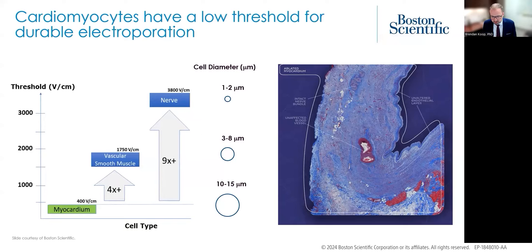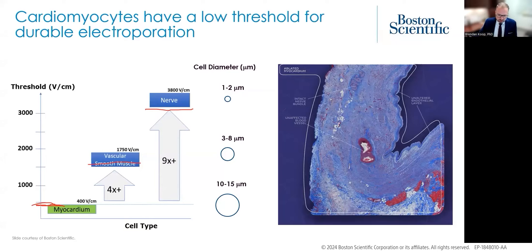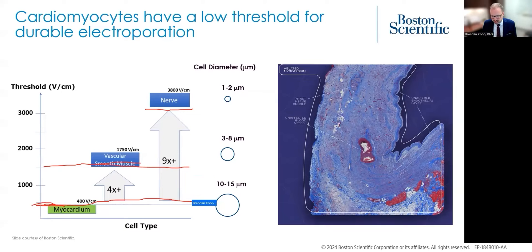Because of these two key points for cardiomyocytes, the cardiac cell has the lowest threshold for irreversible electroporation of any of the cells that we're trying to treat — around 400 to 500 volts per centimeter, depending on the waveform and catheter design. The other types of tissue in the area — vascular smooth muscle, endothelial cells, nerve cells — have many multiples higher threshold for irreversible electroporation. So our job as designers is to treat the local tissue with electric fields in this range, sparing tissues we don't want to ablate while ablating the cardiomyocytes we are trying to ablate.